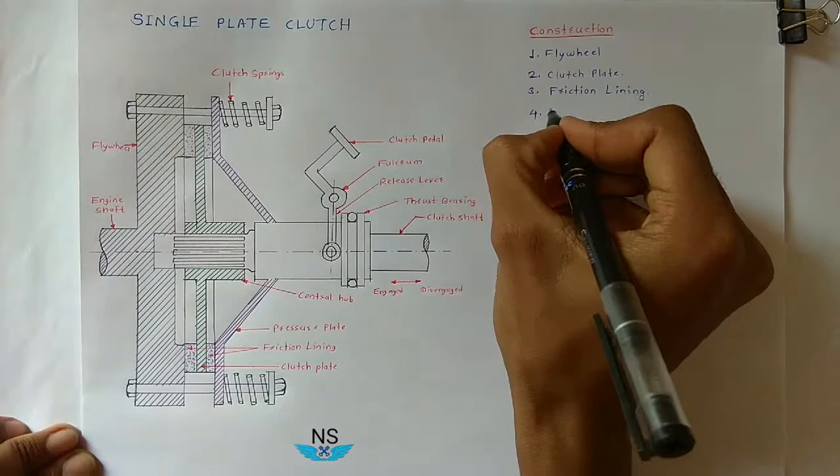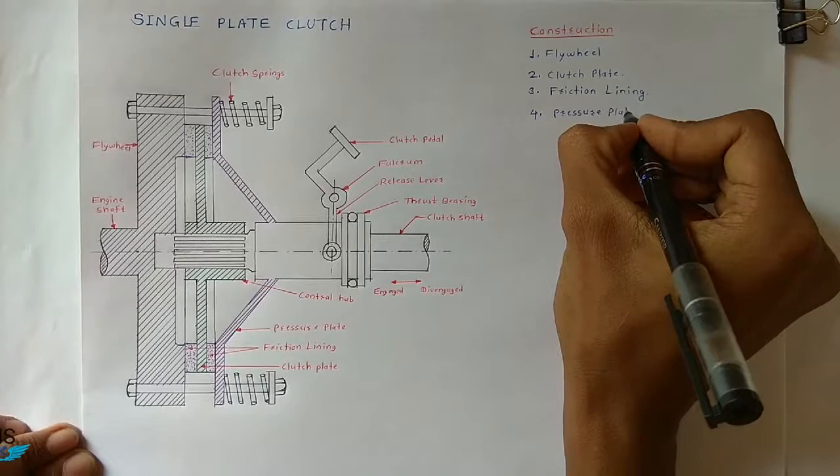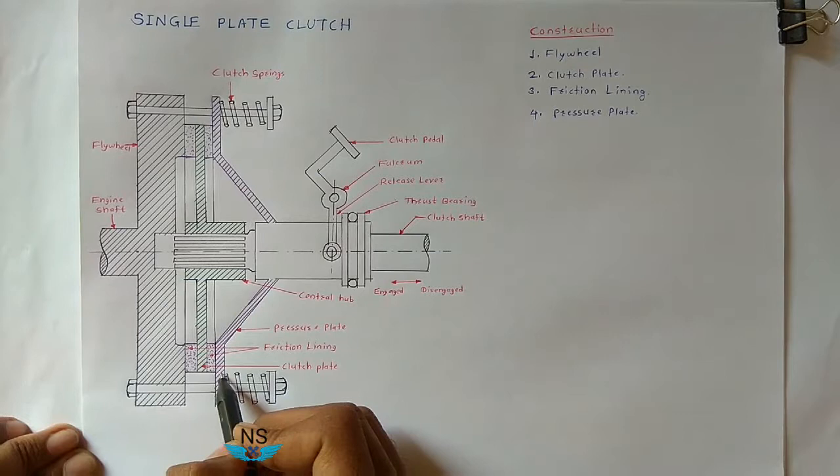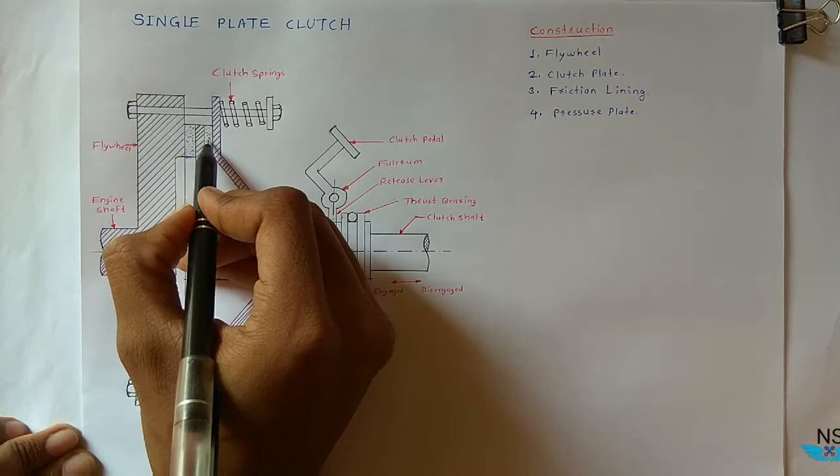The fourth part is the pressure plate. Pressure plate is also a heavy mass plate, and one side of the pressure plate engages with the clutch plate by means of friction lining.